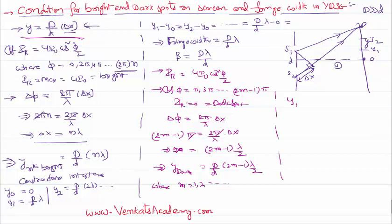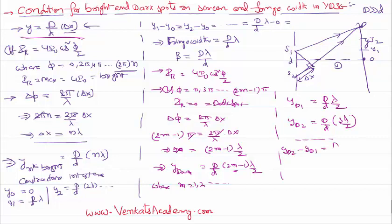So we can say: the 1st dark spot y_dark1 = (D/d) · (2·1−1)λ/2 = (D/d) · λ/2. The 2nd dark spot y_dark2 = (D/d) · (2·2−1)λ/2 = (D/d) · 3λ/2, and so on. The distance between two successive dark spots is (D/d) · (3λ/2 − λ/2) = (D/d) · λ, because the 2s cancel. This is equal to β again.